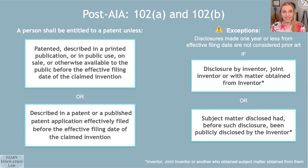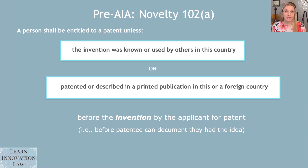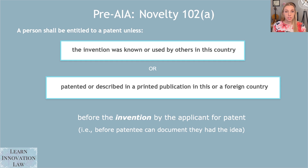Now we'll look at the pre-AIA version of the statute — this one is more complicated, so I'm going to break it up into a few parts. If we have a patent that was filed before March 16, 2013, we're going to be applying the pre-AIA version of the statute, sometimes also called the 1952 Act. Under the pre-AIA version of Section 102A, a person shall be entitled to a patent unless — and this is one of the ways you can invalidate a patent — if you have prior art showing that the invention was known or used by others in this country, meaning in the United States.